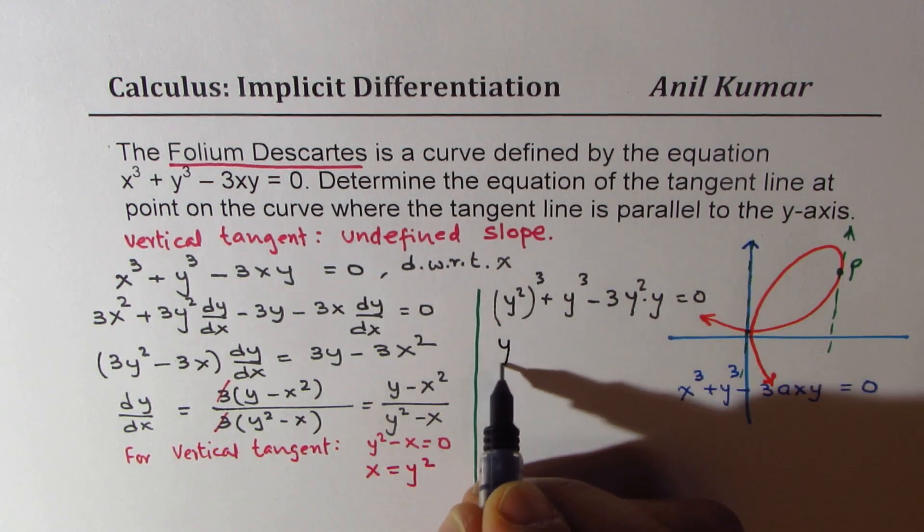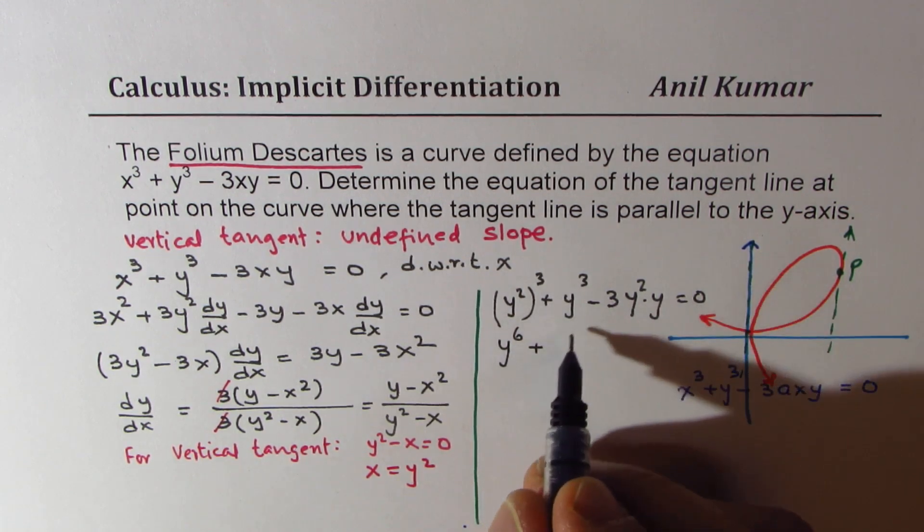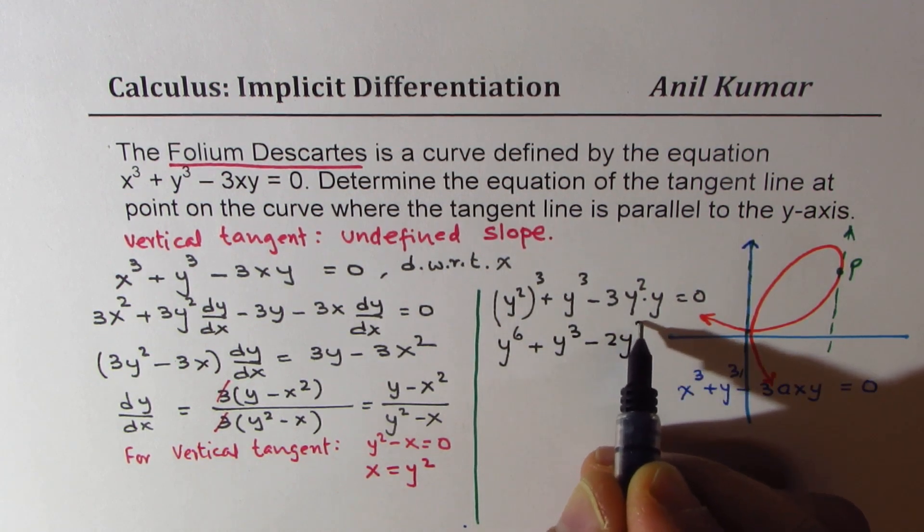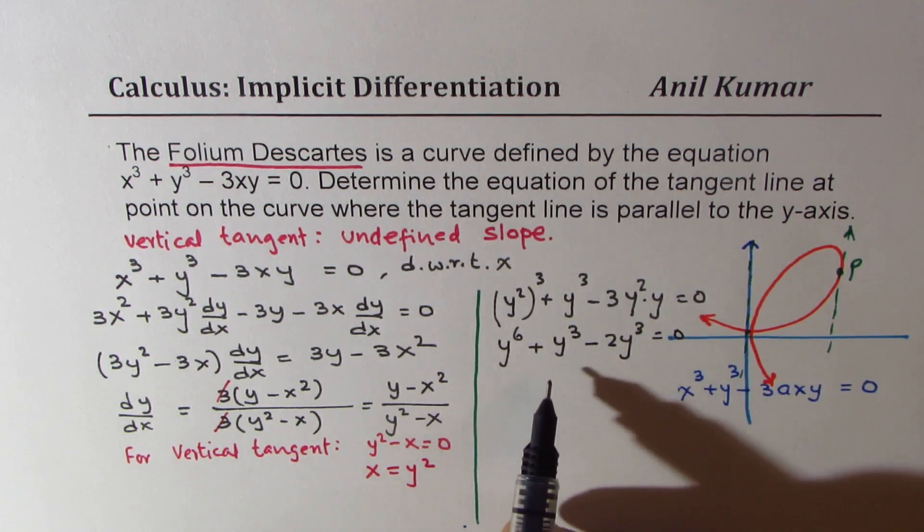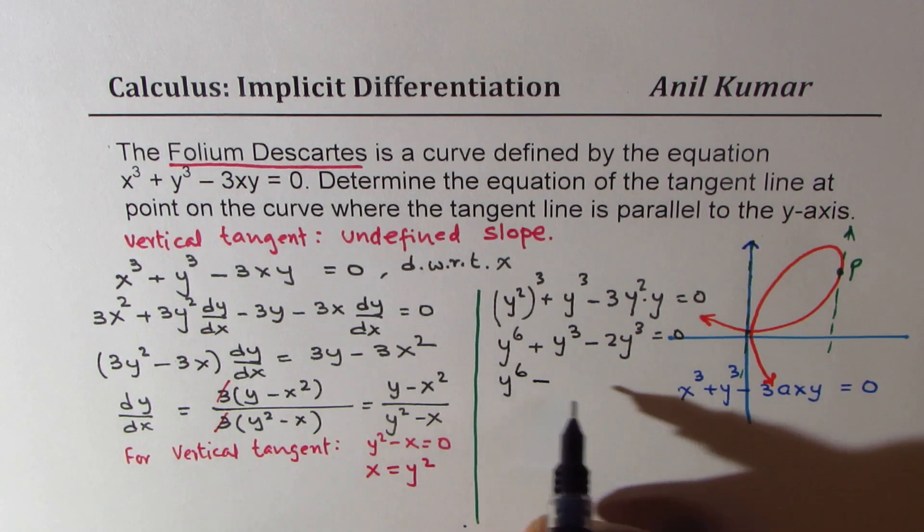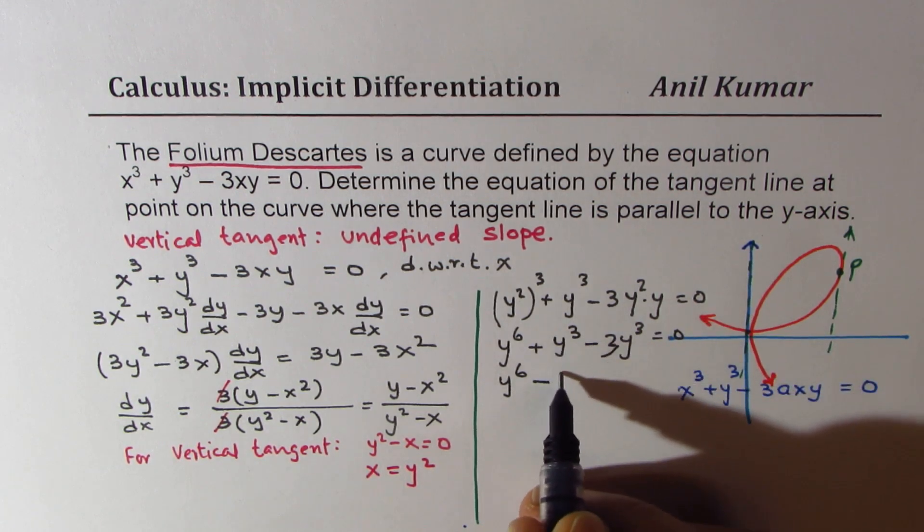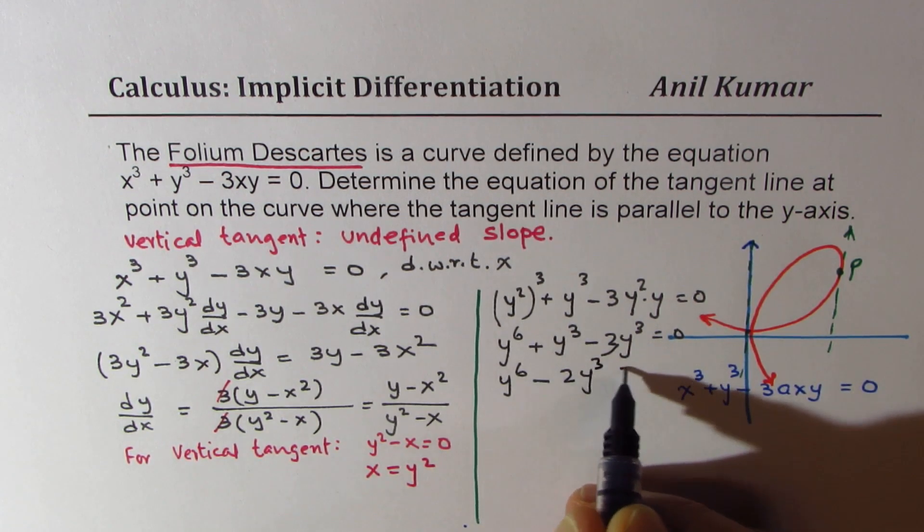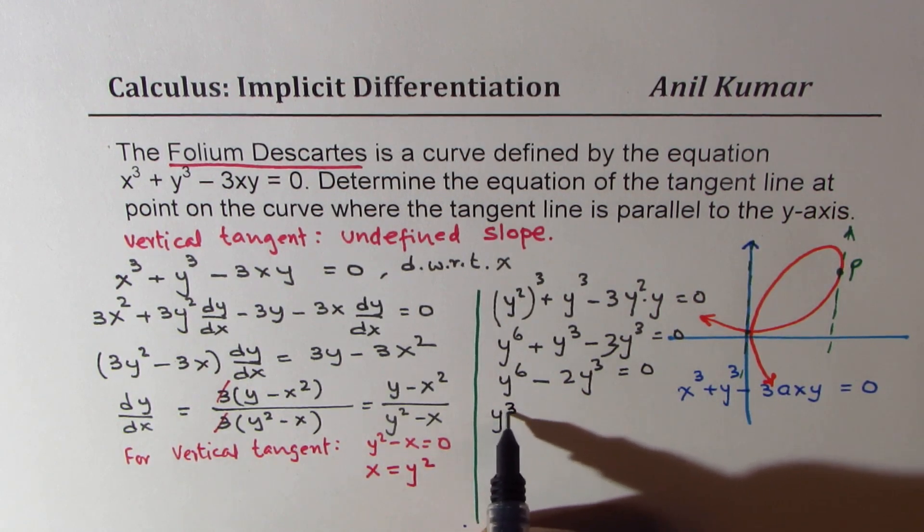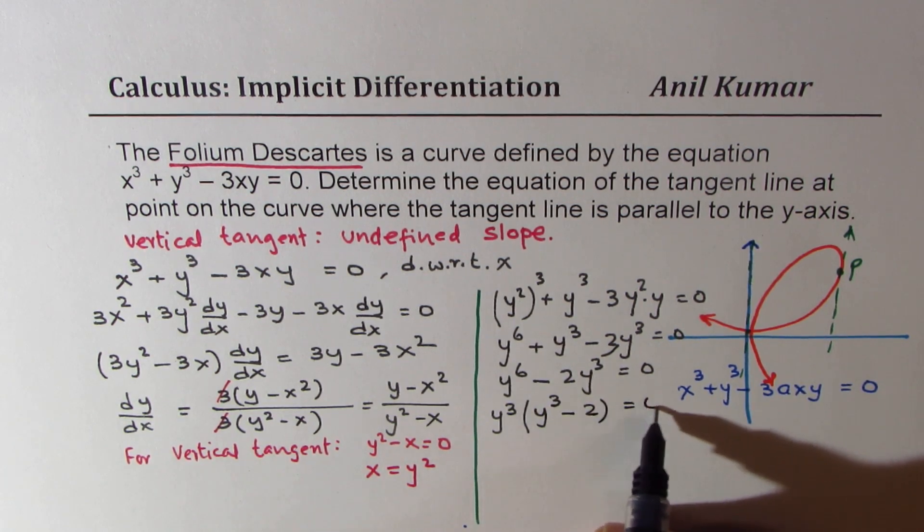Or we can write this as y to the power of 6 plus, let me rewrite, cubed minus 2y cubed equals to 0. So that is y to the power of 6 minus, when you take away, then you get minus 2y cubed equals to 0. Taking y cubed common, we get y cubed minus 2 equals to 0.